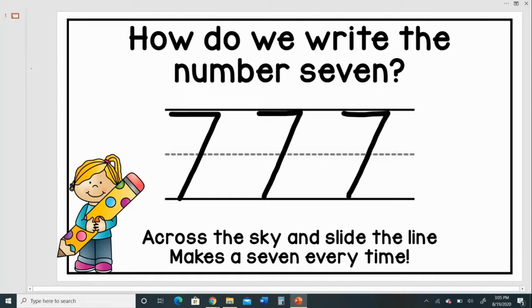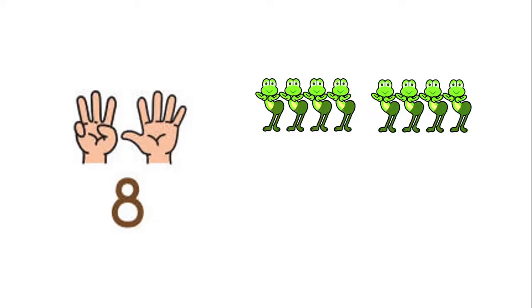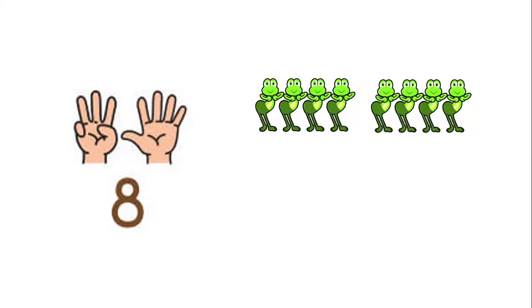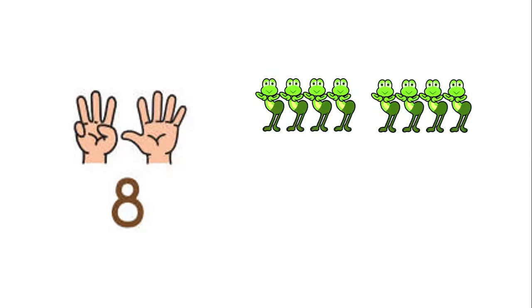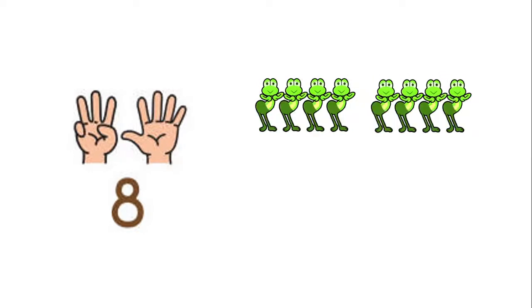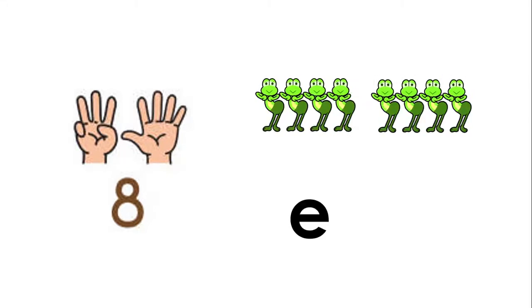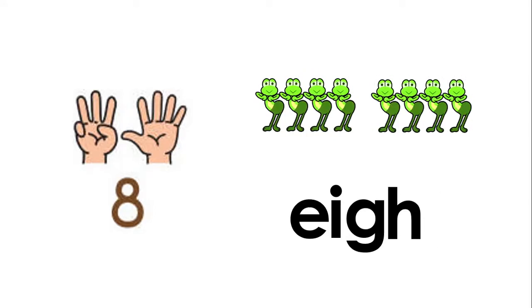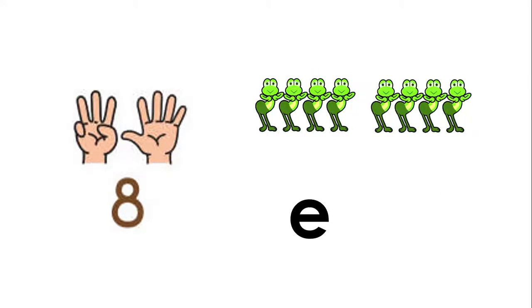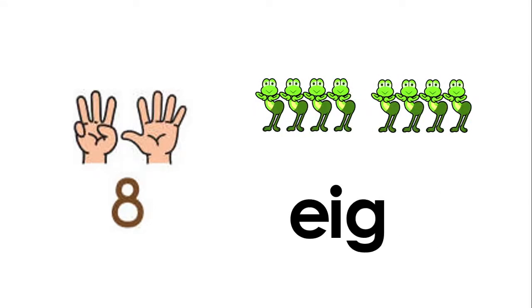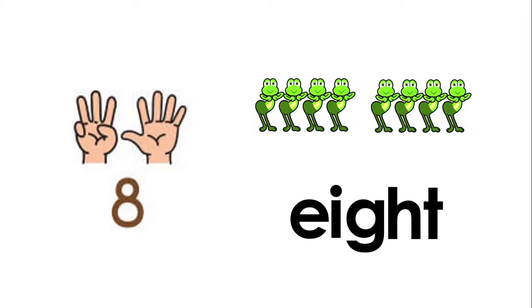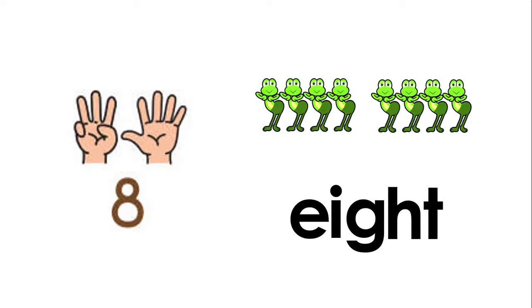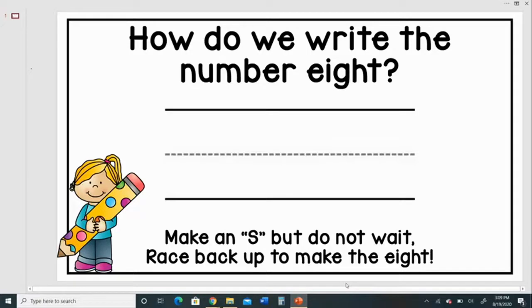And what number comes after 7? Nice job. We are going to have the number 8. And here we have 8 dancing frogs. Now let's spell the number 8 together. E-I-G-H-T 8. One more time. E-I-G-H-T 8. Now how do we write the number 8?